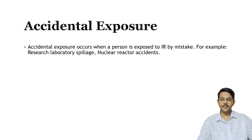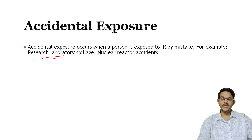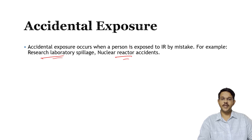Accidental exposure occurs when a person is exposed to ionizing radiation by mistake — such as in research lab spillages where irradiated materials are handled, or in nuclear reactor accidents where radioactive material used for generation of electricity leads to accidental exposure. A common example is the Chernobyl accident, where many people died because of radiation injuries.